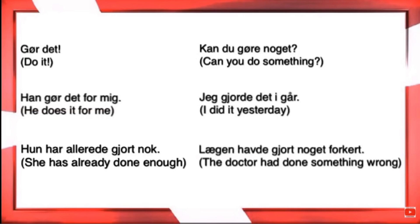'Lægen havde gjort noget forkert' — the doctor had done something wrong. It's in the past, but it's before the past. Let's say this happened five years ago and you're talking to the doctor — prior to that, he had already done something wrong. 'Førdatid' — past perfect.